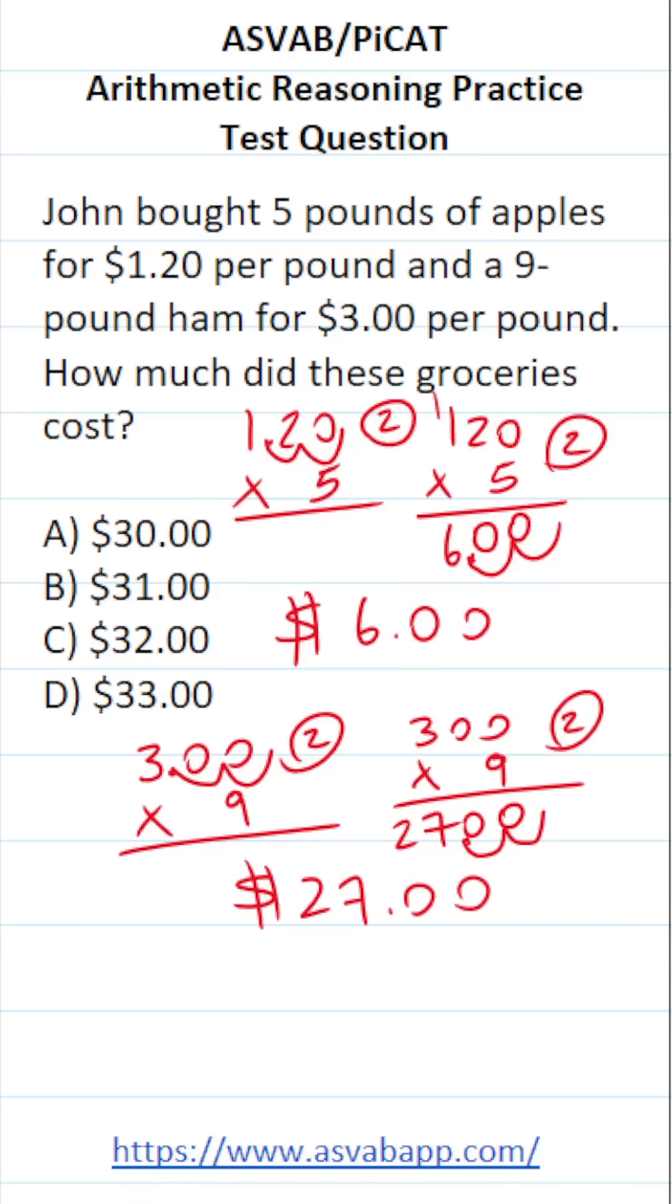How much did the groceries cost? Well, the apples were $6 and the ham was $27. 27 plus six is going to be 33. If you can't do that mentally, you could always do it off to the side.